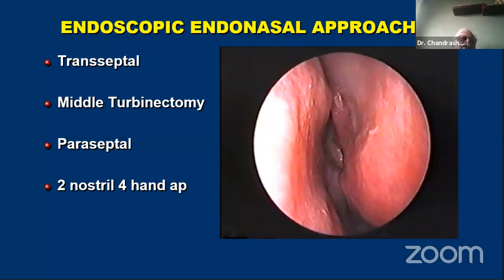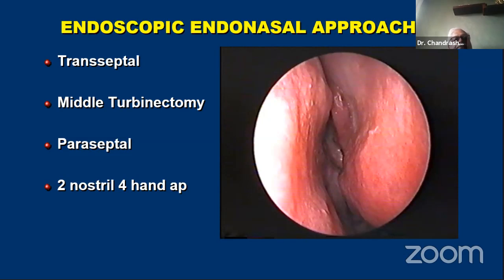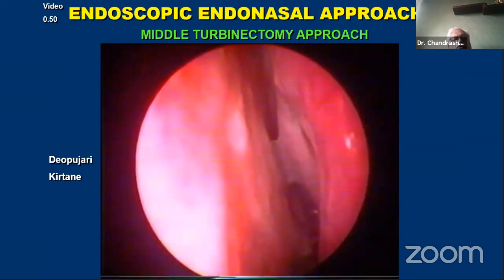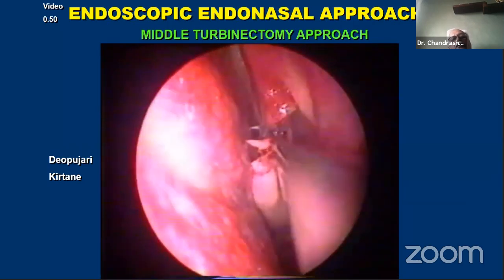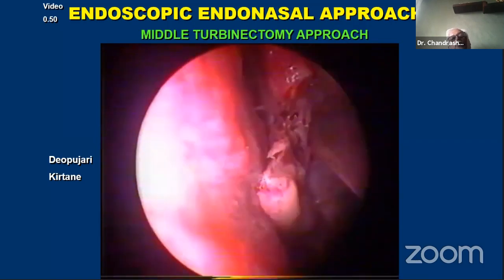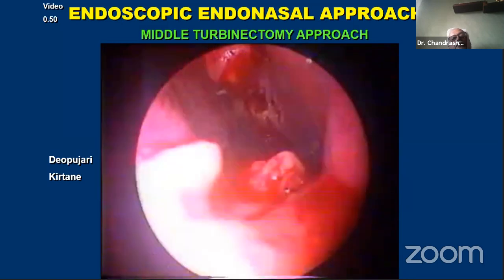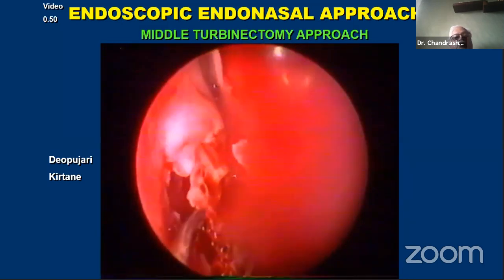Initially there was a lot of debate about whether to do a transeptal approach, whether a middle turbinectomy was necessary, or a paraseptal approach. Lately most approaches have become two-nostril four-hand approaches, which can be called proper skull base approaches. Middle turbinectomy approach is quite good to give you space initially when you are not so well trained. Usually a paraseptal approach works; a transeptal approach or middle turbinectomy approach becomes necessary only if you are going for an extensive skull base procedure. For a middle turbinate approach, you would usually cut the middle turbinate around four or five millimeters below its top to avoid fracturing the skull base or damaging olfactory fibers.